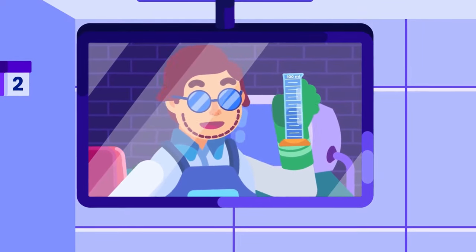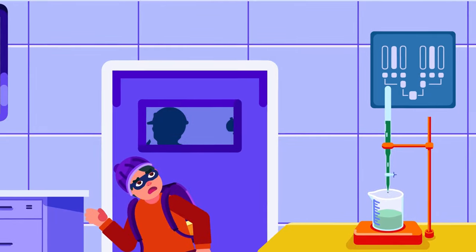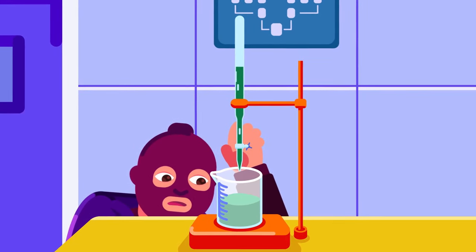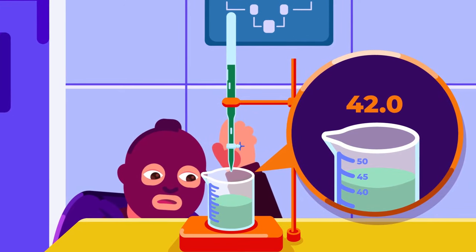In our previous video, we've established different quantities and their measuring instruments. There are various instruments used to measure the same quantity, such as volume that can be measured using a beaker glass or measuring cylinder.